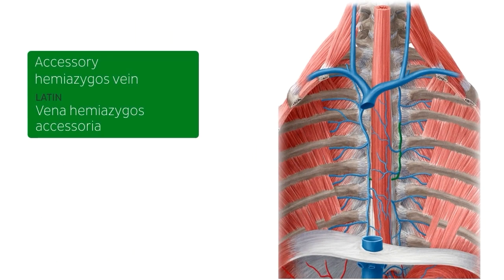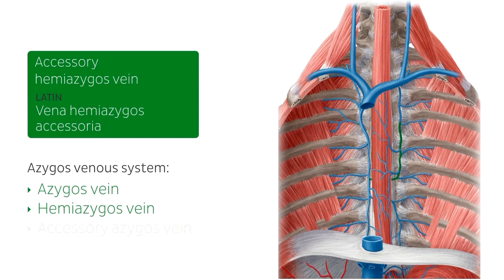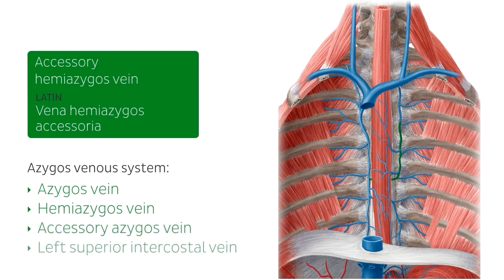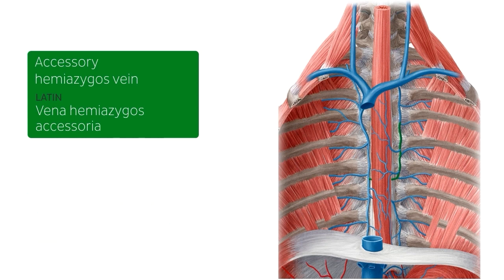Now, in this slide we're having a look at the azygos venous system, which is directly related to the superior vena cava. The azygos venous system drains the viscera within the mediastinum, the back, and the thoraco-abdominal walls. This system consists of the azygos vein, the hemi-azygos vein, the accessory azygos vein, and the left superior intercostal vein. We're going to start with the left side, which includes the accessory hemi-azygos vein.